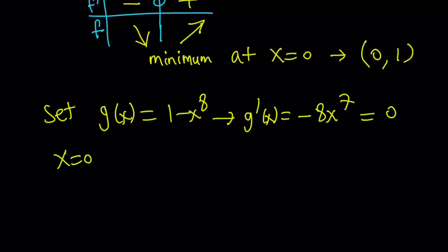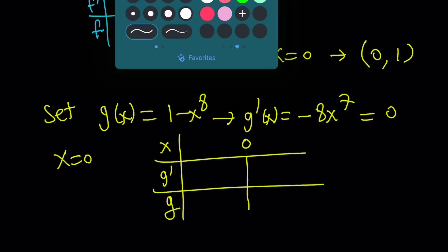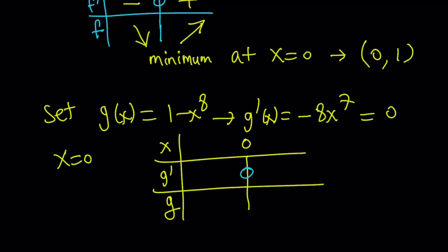So let's go ahead and make a table with this one, too. So I'm going to put the x here, g prime, and g here. And our critical value is, again, 0. So what are we going to do? We're going to find out whether g prime is positive or negative to the left of 0 and to the right of 0.